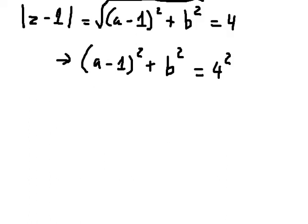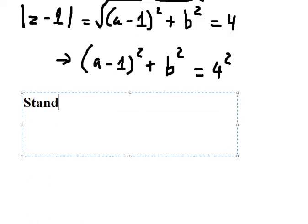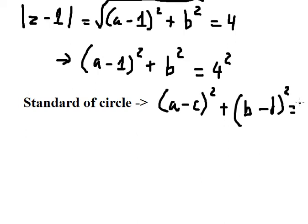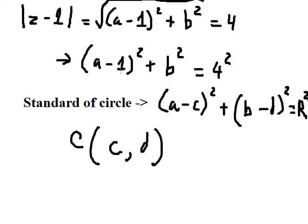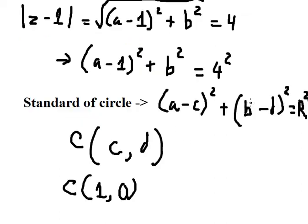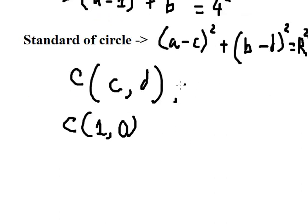We can use the standard form of the circle: (a minus c) squared plus (b minus d) squared equals r squared. If we look carefully, the center of the circle should be (c, d), and on this one we have (1, 0). The radius is number four.